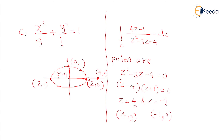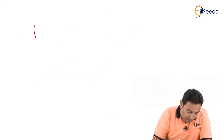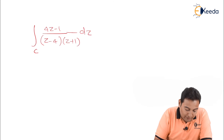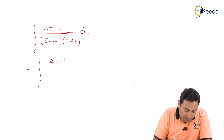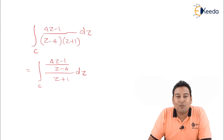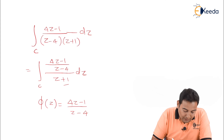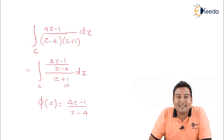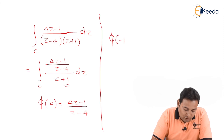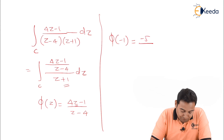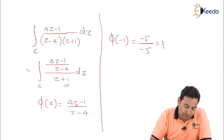Since z = 4 is the outside pole, the factor (z − 4) goes into the numerator. We treat the remaining numerator as φ(z), so φ(z) = (4z − 1) / (z − 4). The simple pole lying inside is z = −1, so we compute φ(−1): numerator is 4(−1) − 1 = −5, denominator is −1 − 4 = −5, giving φ(−1) = −5 / −5 = 1.